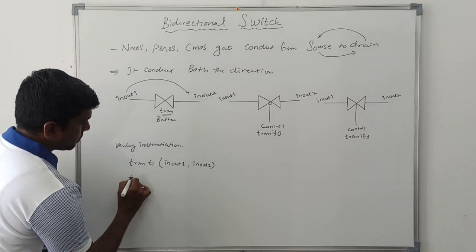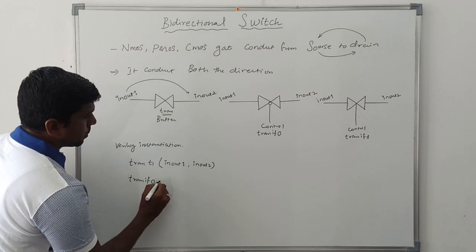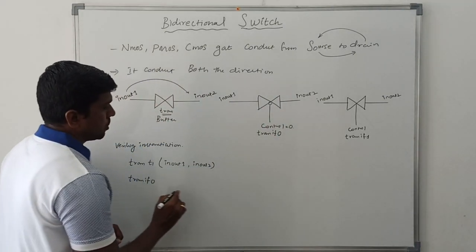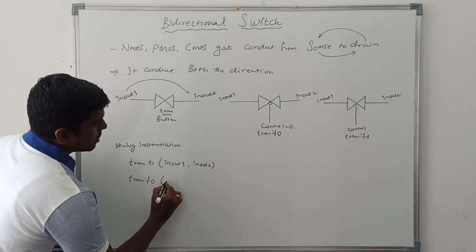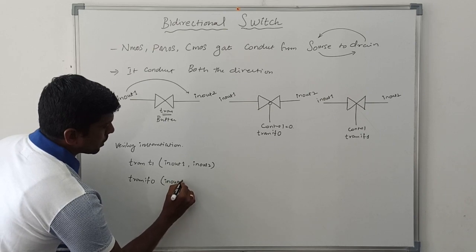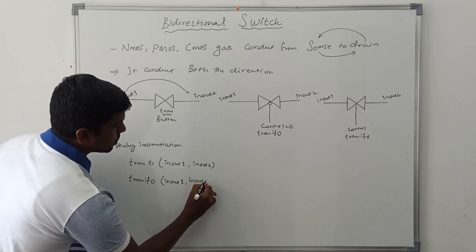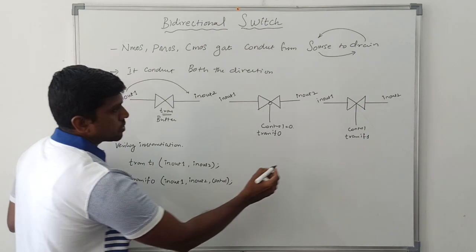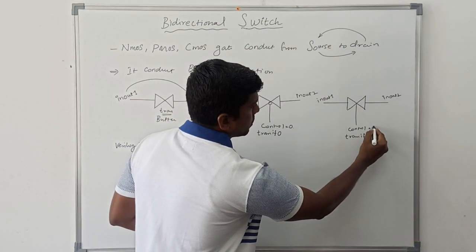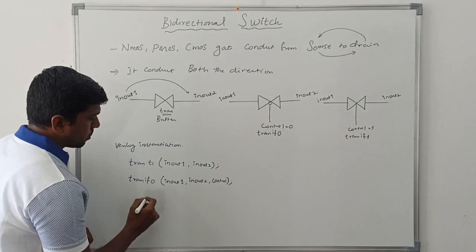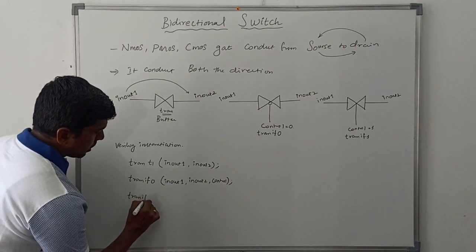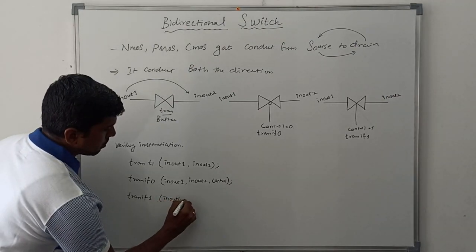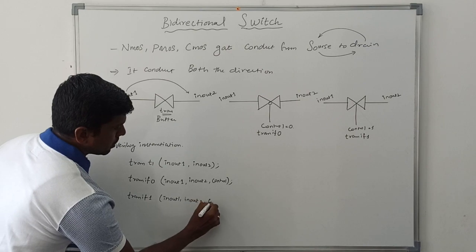For the second instantiation, the keyword is TRAN if 0. Whenever the control signal is equal to zero, the input is connected to the output. Ports are in/out one, in/out two, and control. For the third instantiation, the keyword is TRAN if 1, with control signal value equal to one, so input is connected to output. Ports are in/out one, in/out two, and control.